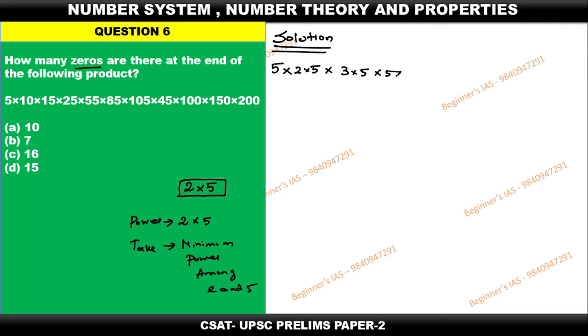85 can be expressed as 17 into 5. Then 105 can be expressed as 5 into 21. But listen carefully, this 21 cannot be expressed in terms of 5 and 2, therefore just leave it. Don't waste your time after finding out.